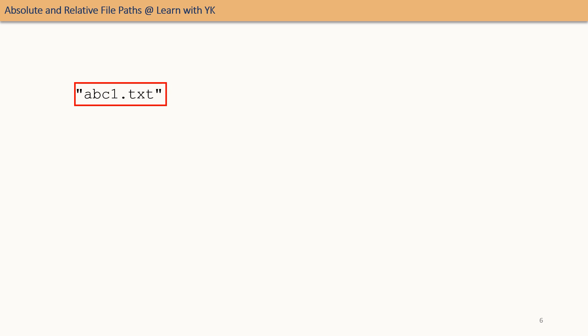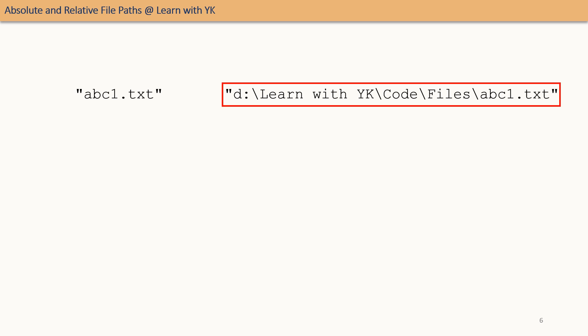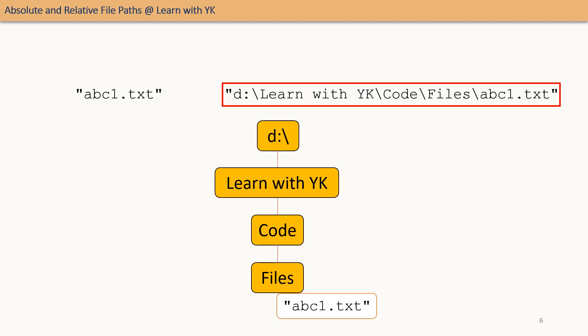Now, if we change the file reference from abc1.txt to D:\learnwithyk\code\files\abc1.txt, then at the time of file creation the file will be created in that specific folder only. And at the time of reading, the code will look for the file in D:\learnwithyk\code\files, irrespective of the code's location. Now the code's location and the file's location are not interrelated. Such a file reference, which is fixed irrespective of the code's location, is called an absolute reference, and the path is called an absolute path.